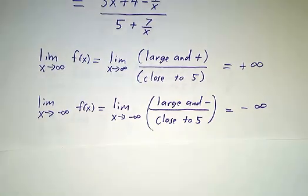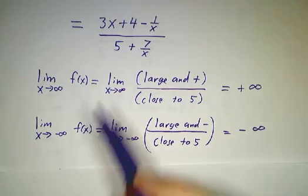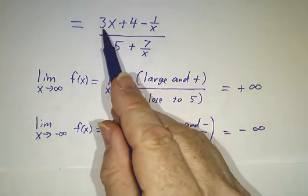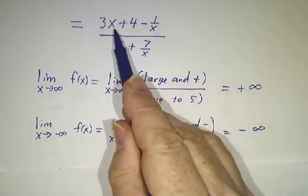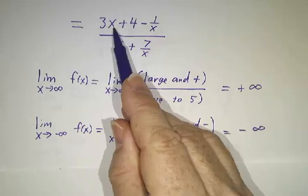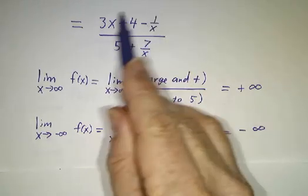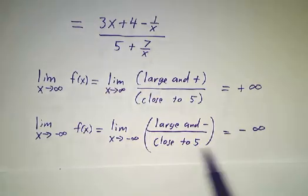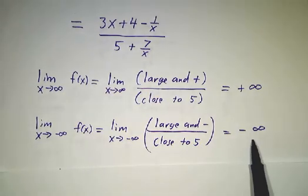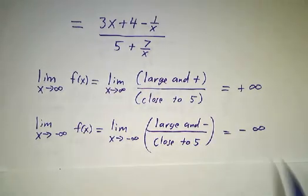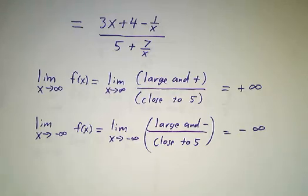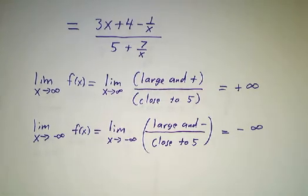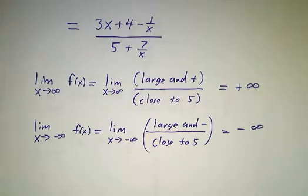Likewise, if you plug in a gigantic negative number, you get something gigantic and negative. But it's gigantic divided by something close to 5, which gives you gigantic — negative but gigantic. So this is typical of what happens if you have more powers of x upstairs than downstairs.